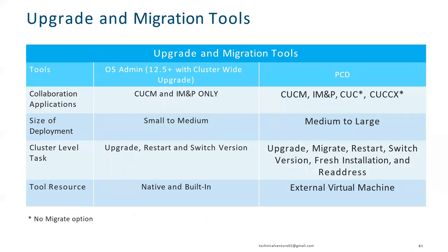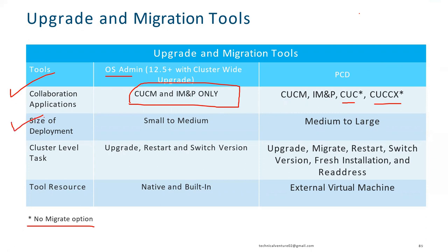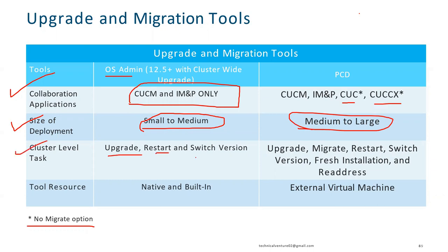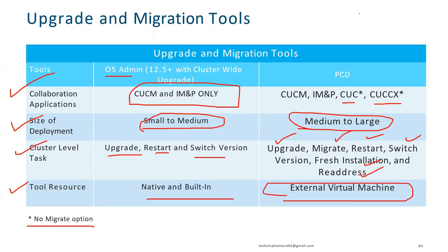Comparing upgrade and migration tools: OS Admin supports CUCM and IMP only, while PCD supports CUCM, IMP, Unity Connection (CUC), and UCCX — but PCD has no migration option for CUC and UCCX. OS Admin is suited for small to medium deployments; PCD is suited for medium to large. With OS Admin, cluster-level tasks include upgrade, restart, and switch version. With PCD, you can also perform migrate, fresh installation, and re-addressing. OS Admin is a native built-in tool; PCD is an external virtual machine.